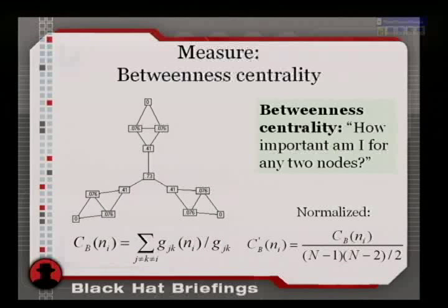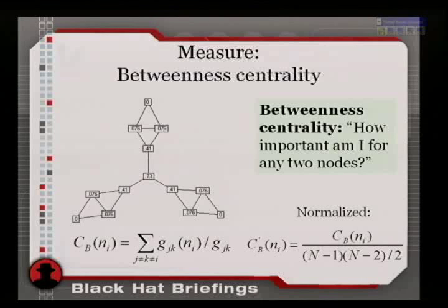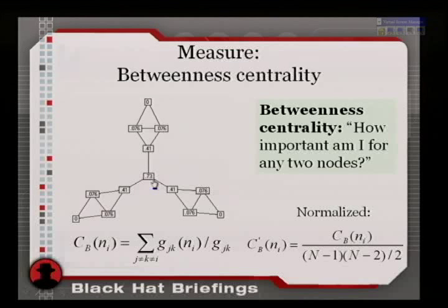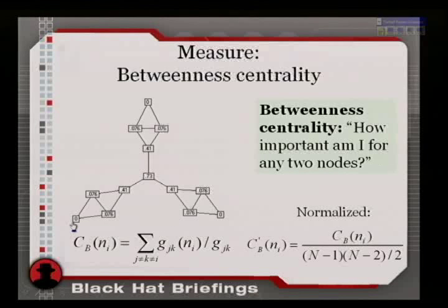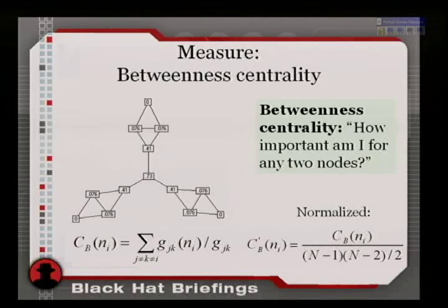Betweenness centrality is a very nice metric because it conforms to our intuition of importance — not just how many friends you have, but how important are you to everybody else around you? If you're the go-to person in your organization, you have high betweenness centrality. It measures how important I am for communication between any two nodes. In the star graph, the one in the middle is most important — if that node is gone, none of the subgraphs can communicate with one another.